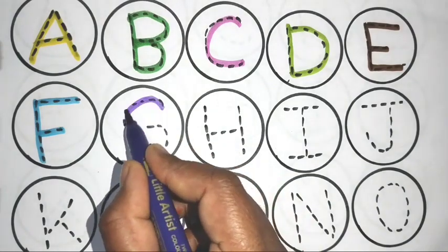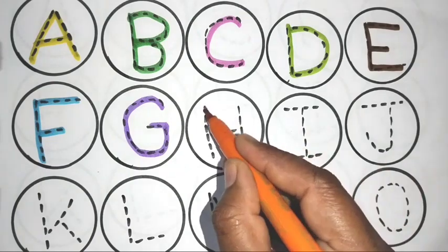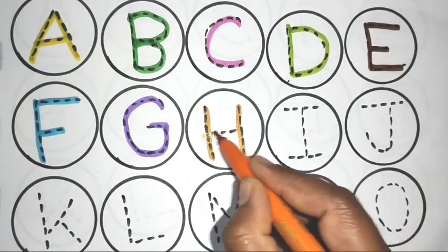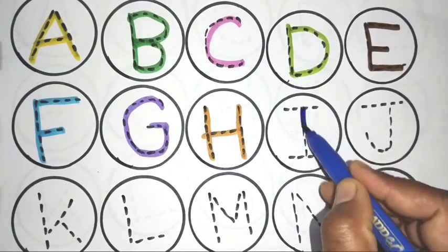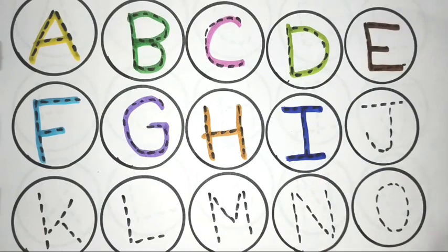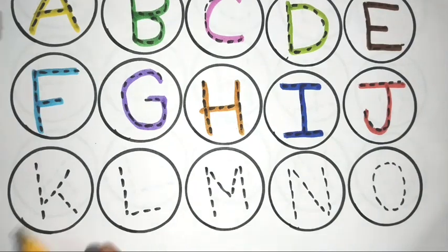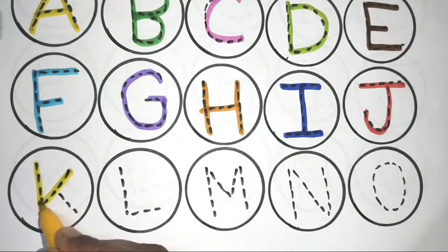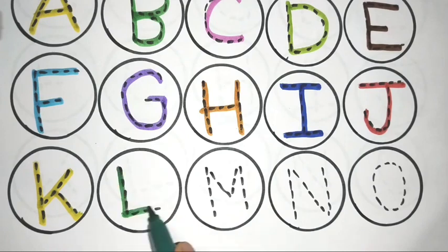G for coat, H for hospital, I for ice cream, J for jack, K for king, L for lemon.